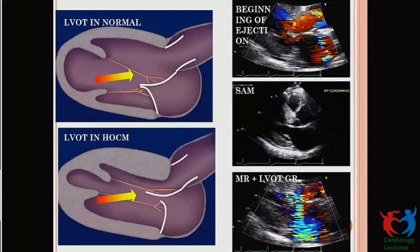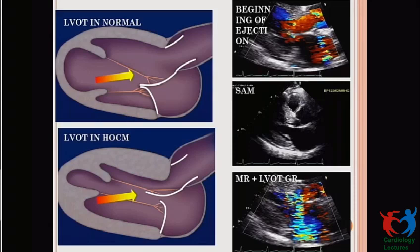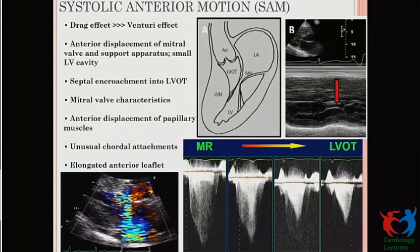Assessing LVOT obstruction: in HOCM, unlike the normal LVOT, thickening of the septum and abnormal position of the papillary muscle and subvalvular apparatus pulls the mitral apparatus — especially the anterior mitral leaflet — toward the septum. As ejection continues, there is systolic anterior motion (SAM) of the anterior mitral leaflet, which further narrows the LVOT. This generates an LVOT gradient, and due to malcoaptation from the anterior motion of the mitral leaflet, there is mitral regurgitation — typically a posteriorly directed jet. If MR is not a posterior jet, further inquiry may be helpful to clarify the actual reason, as it may have importance in surgical management.